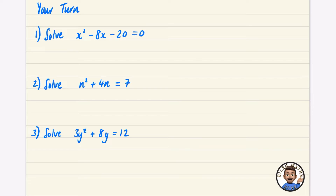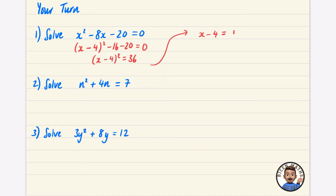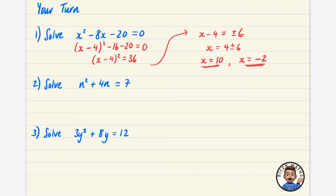For the first practice question, completing the square gives (x − 4)² − 16 − 20 = 0, so (x − 4)² = 36. Square rooting both sides: x − 4 = ±6, so x = 4 ± 6. That means x = 10 or x = −2. You could have factorized this as (x − 10)(x + 2) = 0, but we're practicing completing the square here.